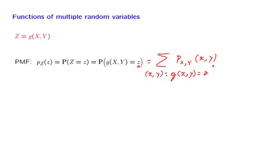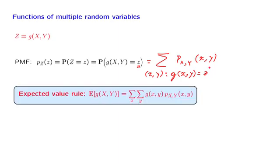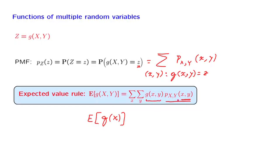Similarly to the case of a single random variable and a function of it, we can talk about expected values of functions of two random variables. There is an expected value rule that parallels the one developed for single-variable functions. With probability p(x, y), a specific (x, y) pair occurs, and when that occurs, the value of the random variable is a certain number. The product of these two terms gives a contribution to the expected value. We then sum over all possible (x, y) pairs to obtain the expected value.